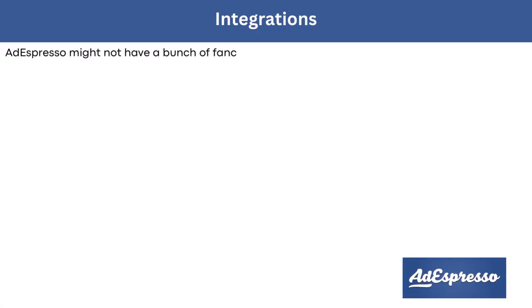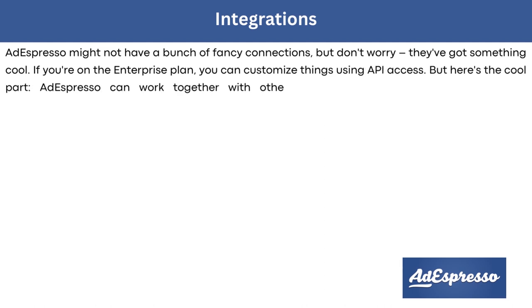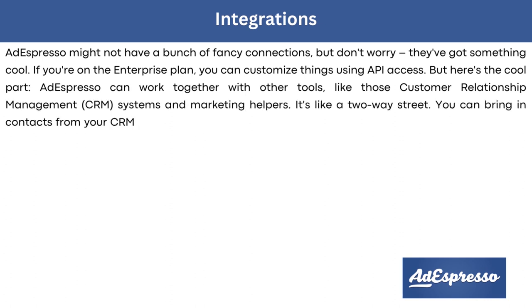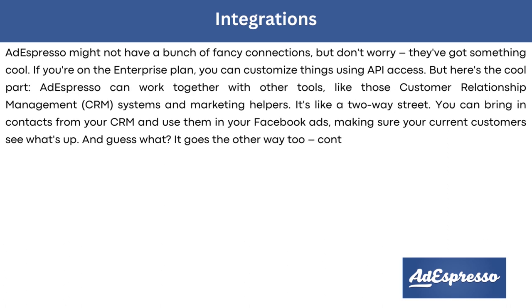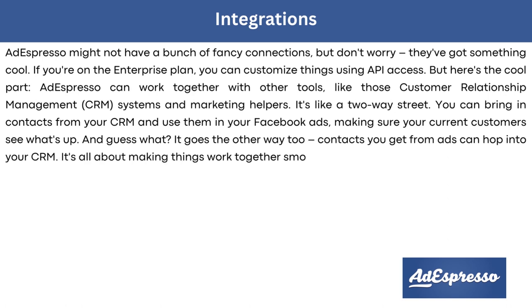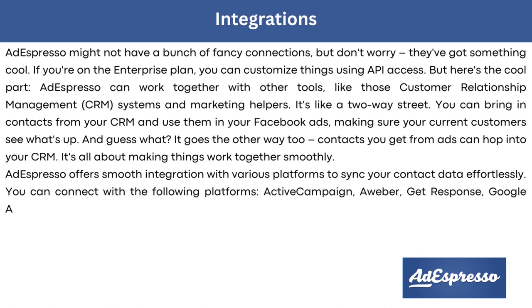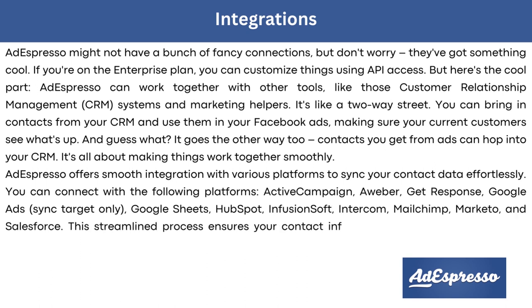AdEspresso may not have a massive list of integrations, but enterprise users can customize things using API access. The platform connects with CRM and marketing tools in both directions — you can import contacts from your CRM to use in Facebook ads, and contacts gathered from ads can flow back into your CRM. Supported platforms include ActiveCampaign, Aweber, GetResponse, Google Ads, Google Sheets, HubSpot, Infusionsoft, Intercom, MailChimp, Marketo, and Salesforce.